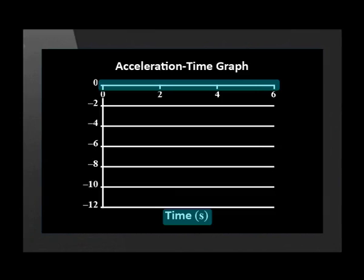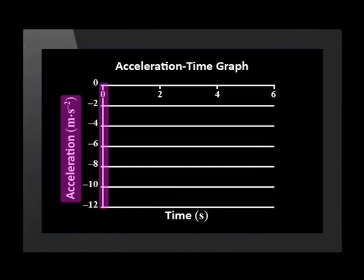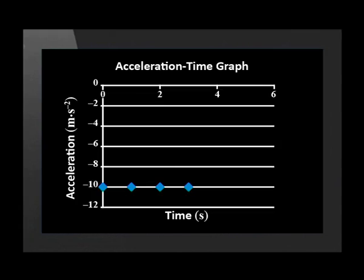We plot time on the x-axis and acceleration on the y-axis. We plot our points. The ball accelerates at minus 9.8 meters per second squared every time we measure it. Remember that the minus here refers to the downward direction. This gives us a straight line parallel to the x-axis. This shows us that the acceleration of the object is constant the whole time.